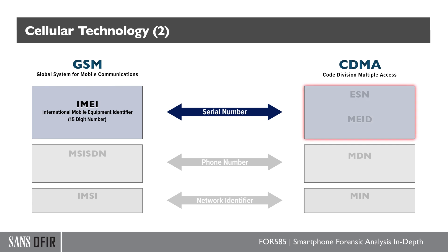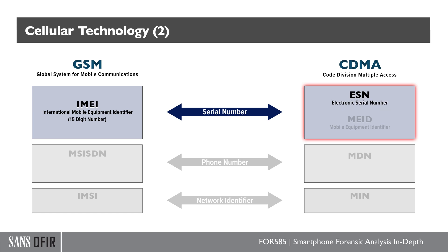For CDMA, there are two options. The first is the Electronic Serial Number, or ESN. This could be 11 digits in decimal or 8 digits in hex, so make sure you know the difference. The hex should stand out to you when you look at this identifier.